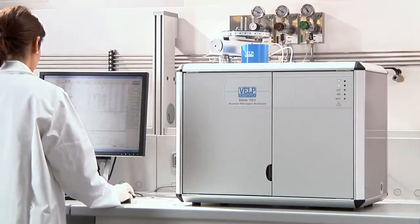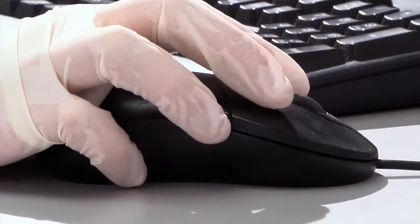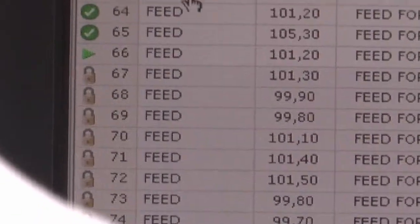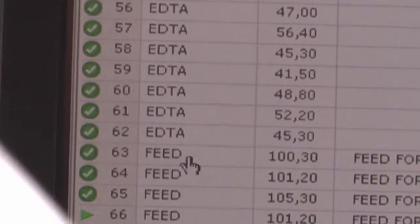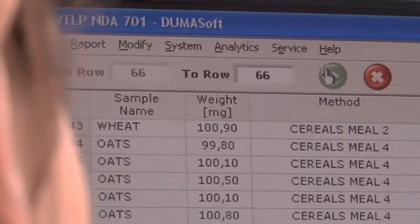Automatically, the sample is purged in a stream of helium, eliminating all traces of atmospheric nitrogen, essential because the NDA701 is able to reach particularly low detection limits.